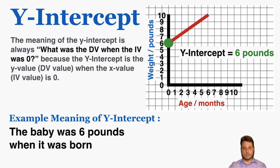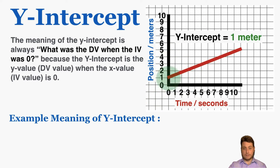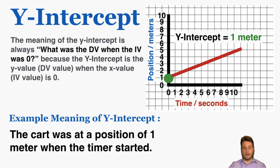Another example with the position and time situation: the y-intercept is one meter. That means that before any time has passed, the object is already one meter ahead of wherever we're considering the zero point to be. So the object was at a position of one meter when the timer started.